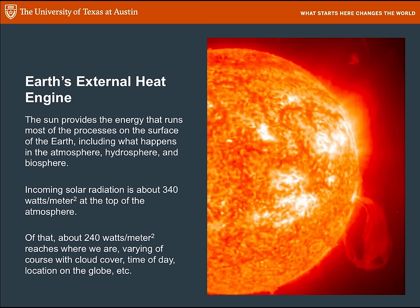Let's start with the sun, the external heat engine. This, by the way, is a photograph of a sunspot. The sun provides energy that runs most of the processes that happen on the earth's surface. The atmosphere, the hydrosphere, and the biosphere are all strongly affected by the sun. Incoming solar radiation at the edge of the atmosphere is about 340 watts per meter squared, and at the surface of the earth about 240 watts per meter squared. A watt is an energy unit per time, so time is already built into that measure.